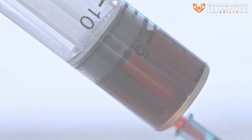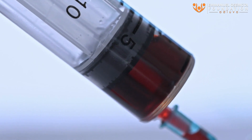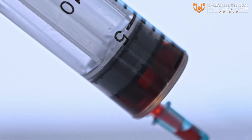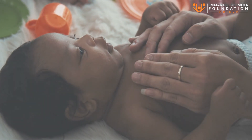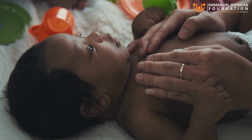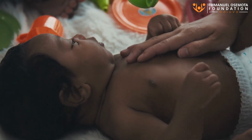Let's break this down. If both parents have one normal hemoglobin A gene and one hemoglobin S gene, each of their offspring has a 25% chance of inheriting two normal hemoglobin A genes — not having sickle cell trait or disease; a 50% chance of inheriting one normal hemoglobin A gene and one hemoglobin S gene, having sickle cell trait; and a 25% chance of inheriting two hemoglobin S genes, developing sickle cell disease. These odds remain the same for each child the couple conceives, irrespective of the genetic outcome of their previous children.